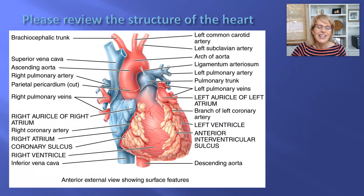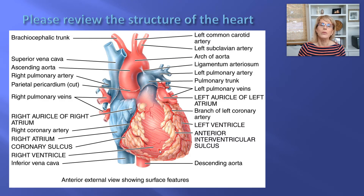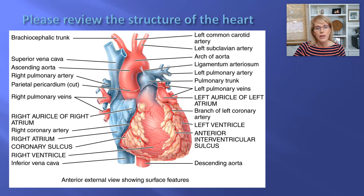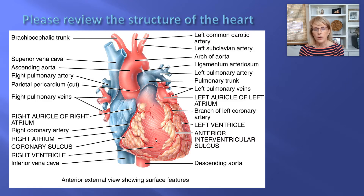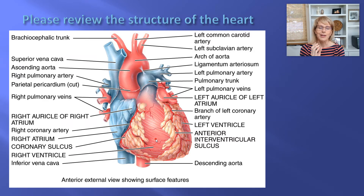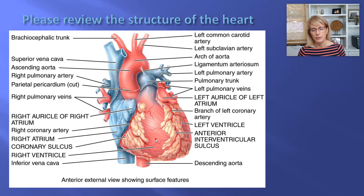Luckily, every little chunk of muscle tissue is generally being supplied with oxygenated blood from two different arteries. For example, this artery is supplying blood here, but this artery could also supply blood to this area. That is because the heart has evolved in a pretty clever way — the heart knows that if people live long enough, one of those arteries may have less blood supply, so it needs to have a backup plan. Every little part of the heart is going to have that backup plan.